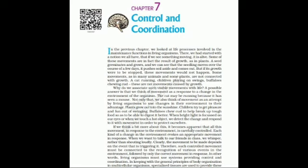The next gland is the parathyroid, which is present surrounding the thyroid gland. It releases parathyroid hormone, which regulates calcium and phosphate levels in the blood. Next, we have the pancreas, which is a leaf-like structure in the digestive system.